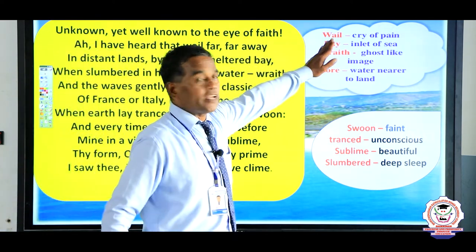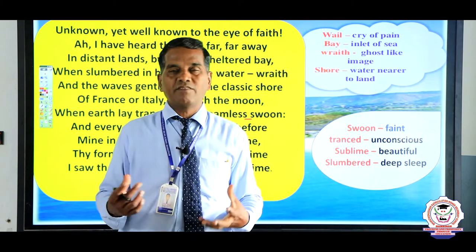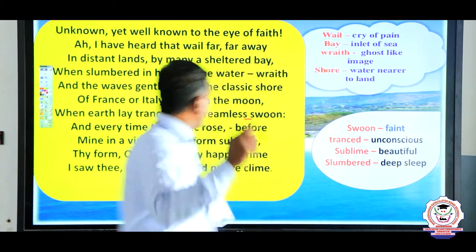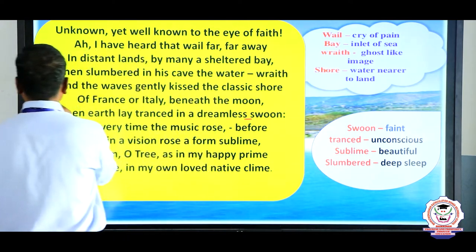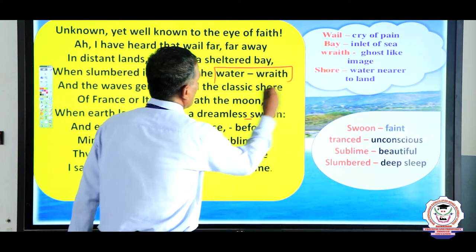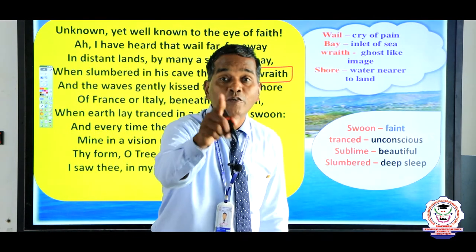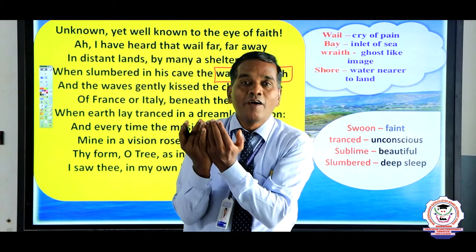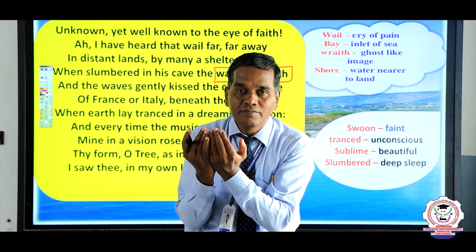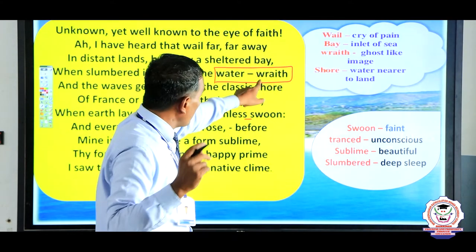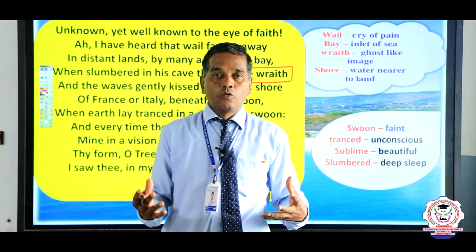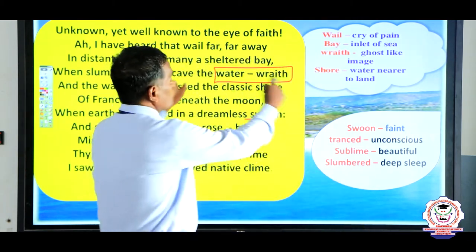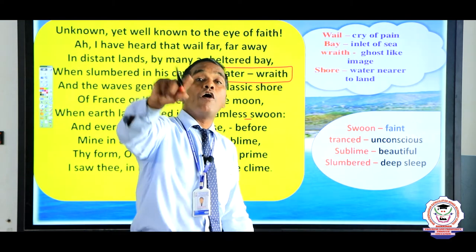Key glossary for this stanza: 'Wail' means cry, pulambal. 'Bay' means sea area near land. 'Water wraith' — wraith means a ghost-like apparition, but here 'water wraith' together means the god of water. Even the god of water listens to the voice of the dream, the lament. The real word 'wraith' means ghost-like apparition, but here the poet uses it as 'water wraith' to mean the god of water.